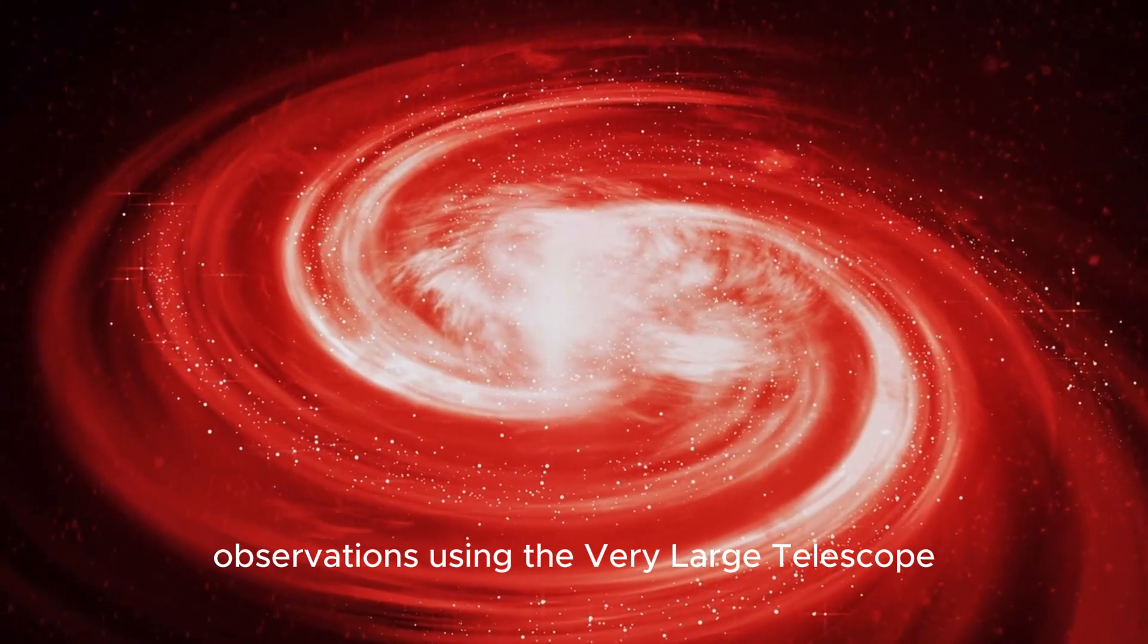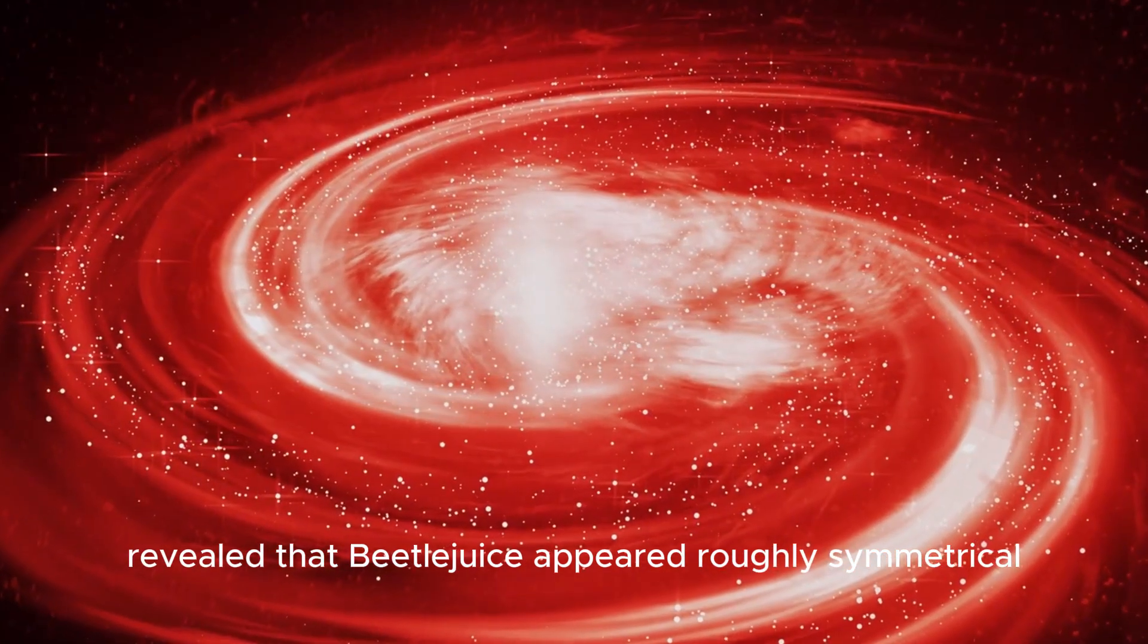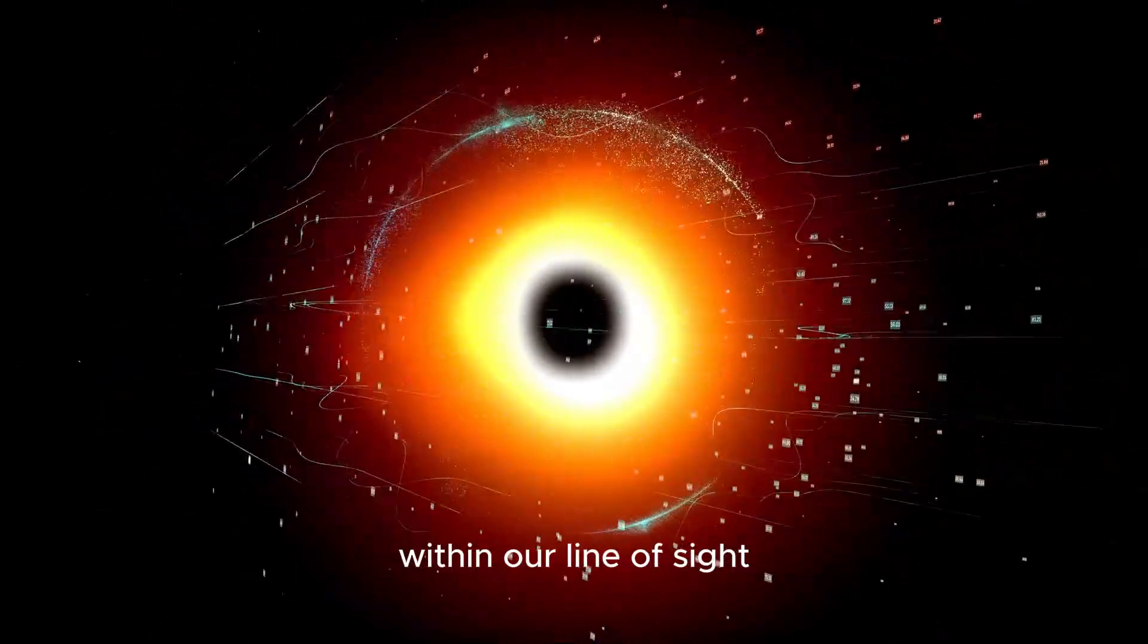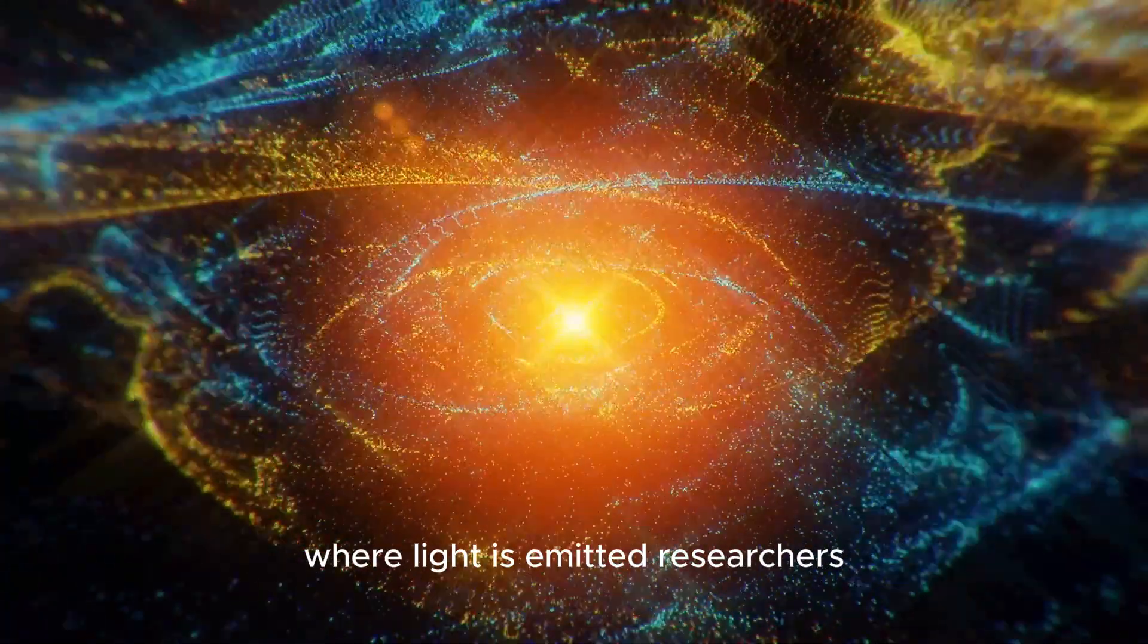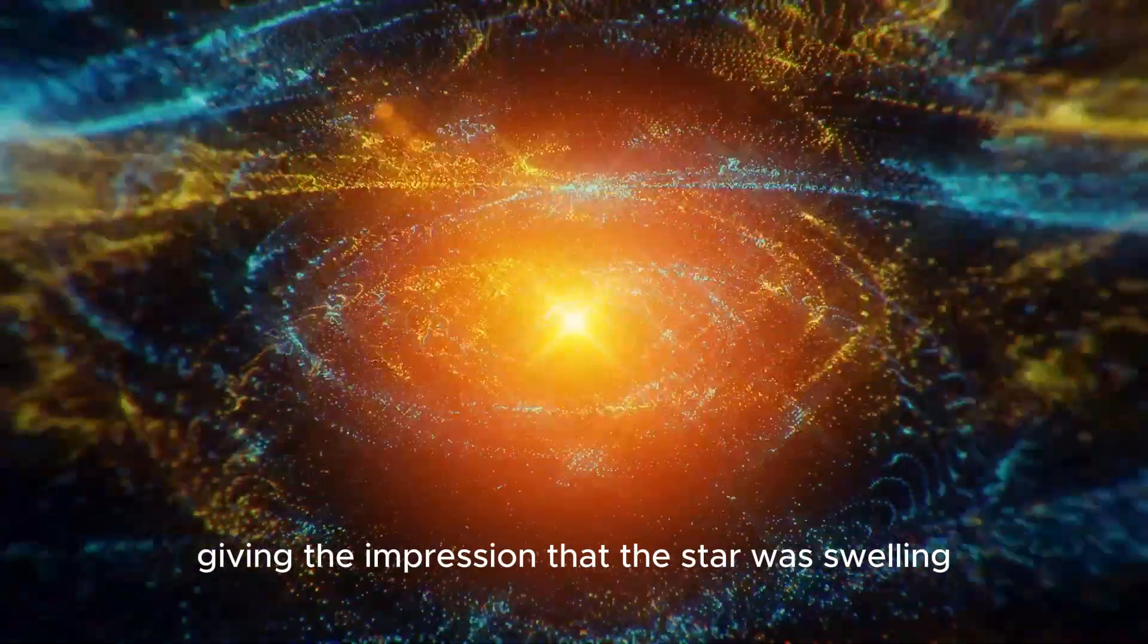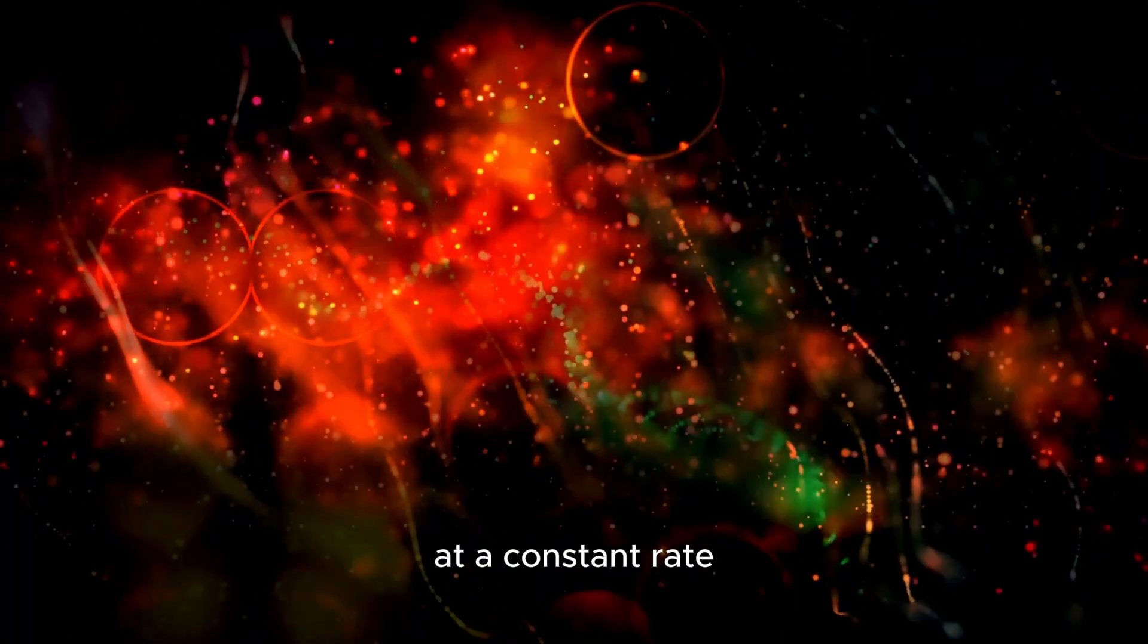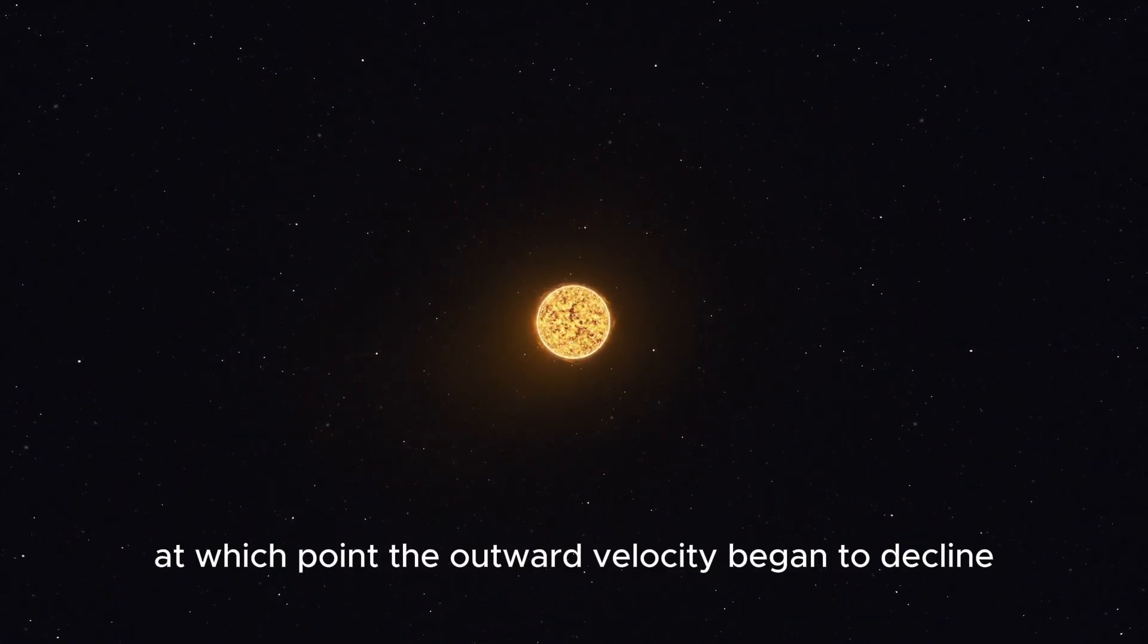Observations using the very large telescope in the optical spectrum revealed that Betelgeuse appeared roughly symmetrical, but its photospheric layers exhibited signs of substantial disturbance. Within our line of sight, the photosphere represents the outer layer of the star where light is emitted. Researchers also detected an expansion of the photosphere, giving the impression that the star was swelling. When viewed from Earth, this expansion continued at a constant rate of approximately 8 km per second for most of the year until mid-November 2019, at which point the outward velocity began to decline.